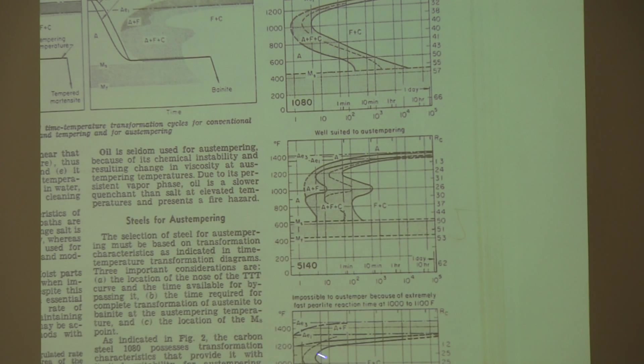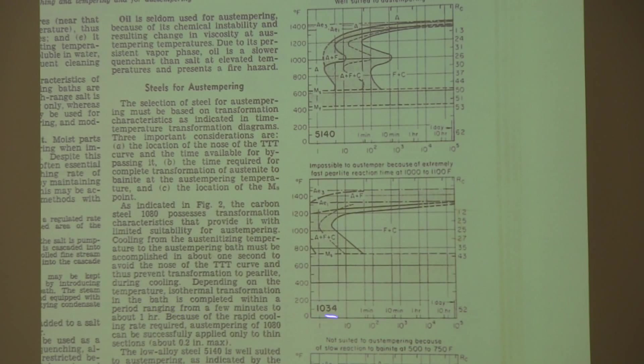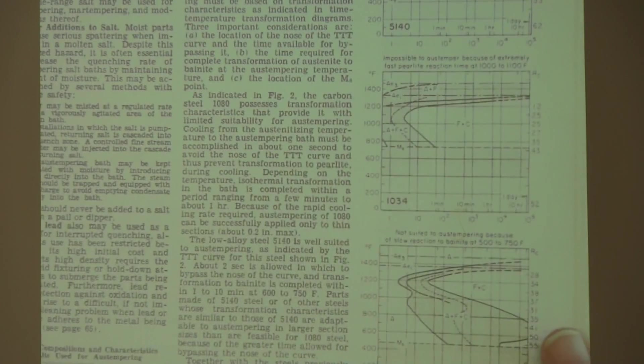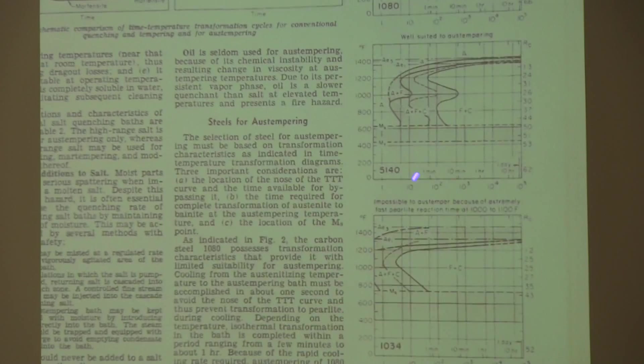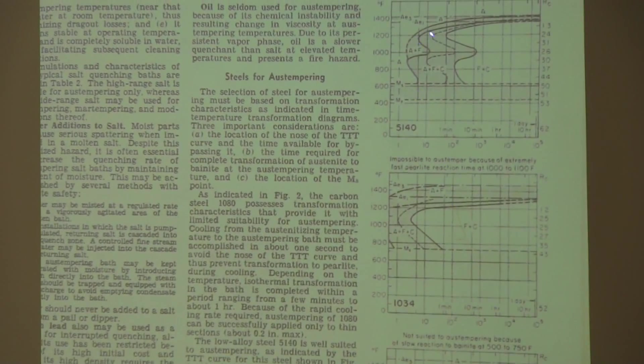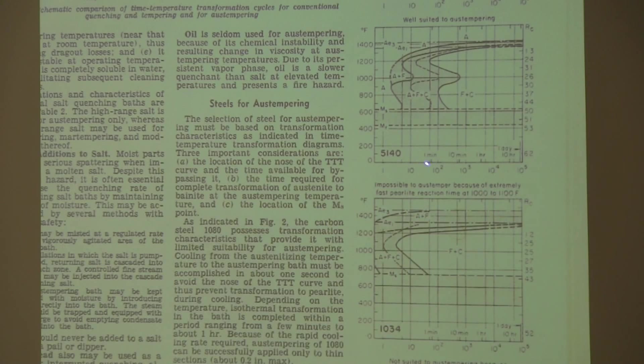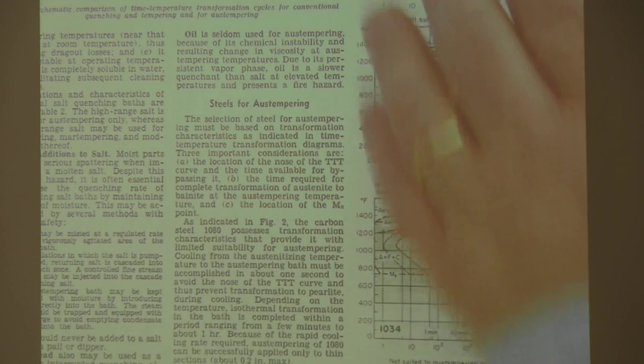Here are some curves. This is a 1080 steel, a 5140, a 1034, and a 9161. You can start looking at these things and seeing the amounts of time that you have for transformation. These low alloy steels, 10-20 seconds, and the stuff will have transformed.